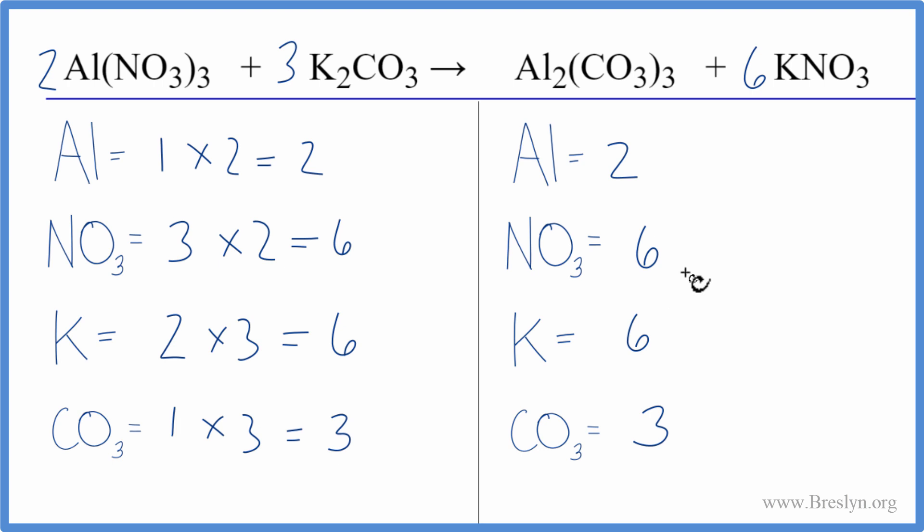And actually this equation's now balanced. That was it. That's what we needed to do. When you count these polyatomic ions as just one item, it makes it a lot easier because you're not chasing these oxygens all over the place. Either way, you get the same answer, just works a little quicker.